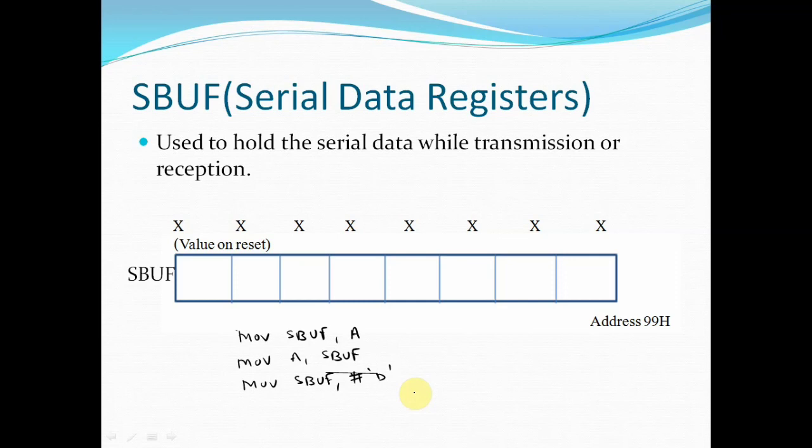When bits are received serially via the RxD line, the 8051 deframes it by eliminating the stop and start bits. Thus it makes a byte out of the data received and places it into the SBUF register.